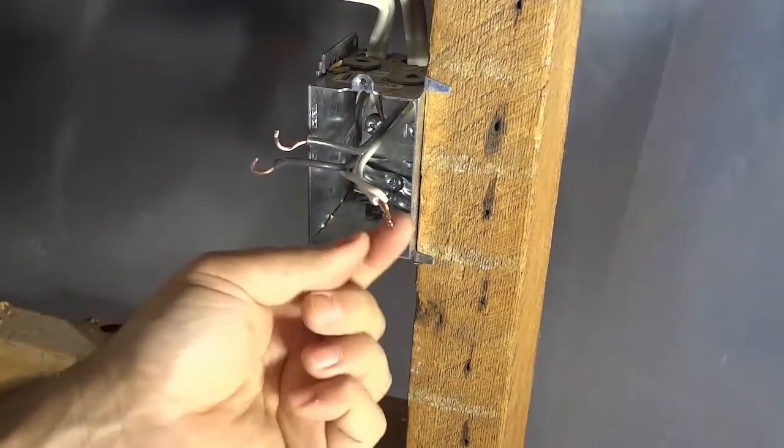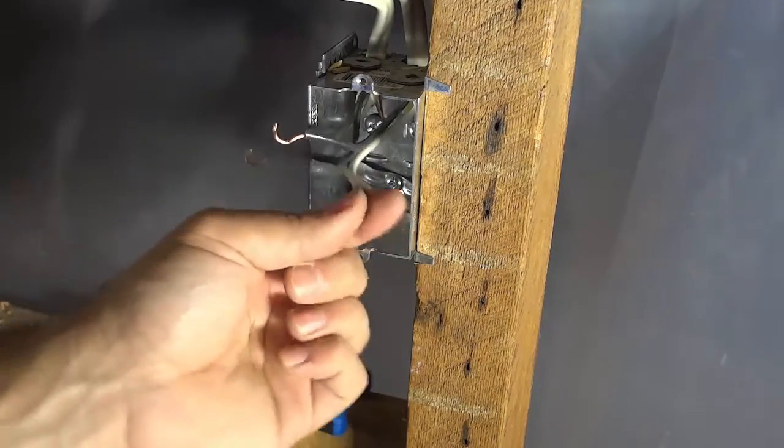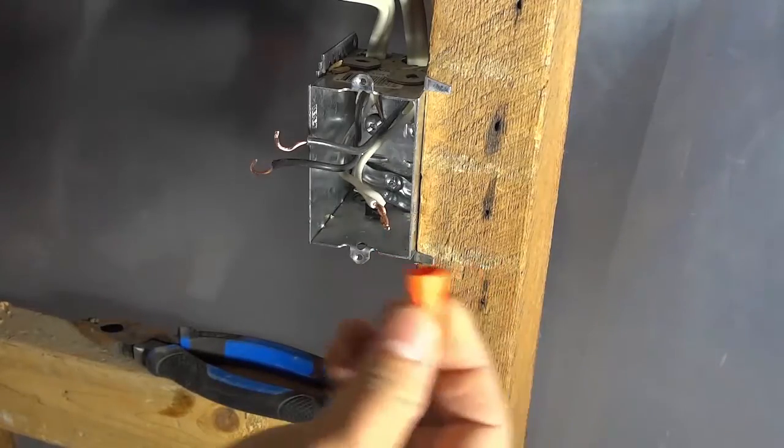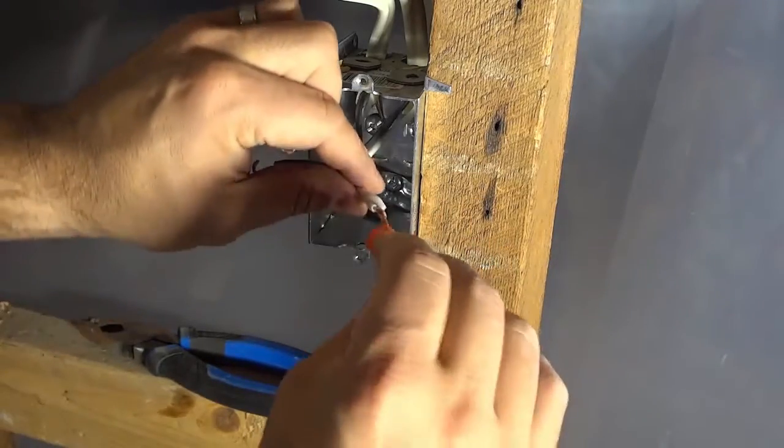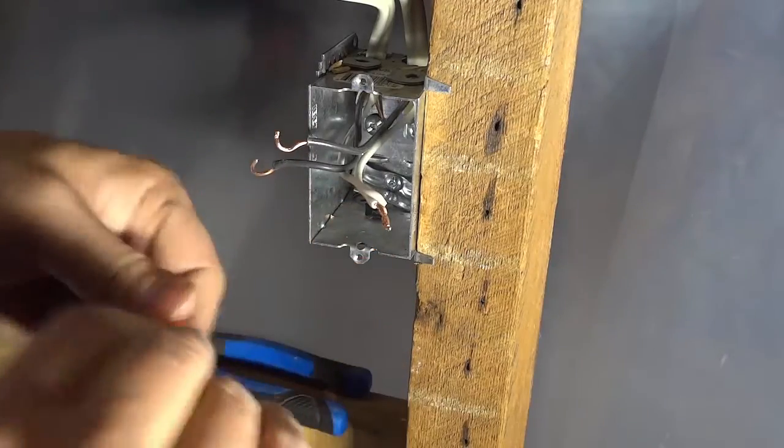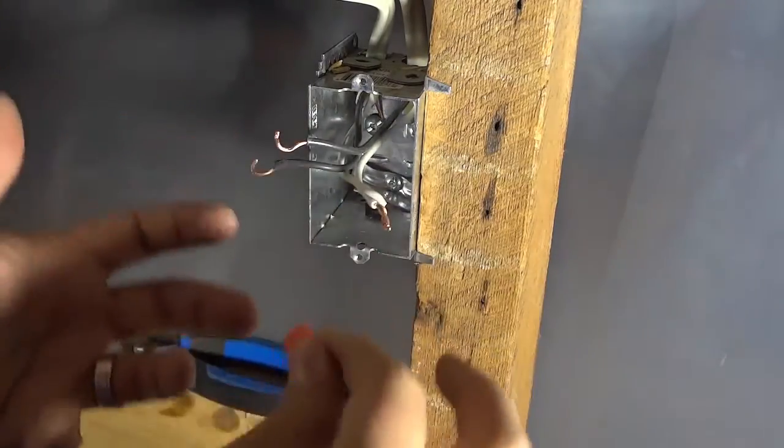Now I did forget to mention that when I was twisting these, I was twisting them together clockwise. So you twist these together clockwise and then you get the wire nut or the moret, and you twist it onto those two twisted wires clockwise. That really just double tightens them and makes sure nothing is going to come loose.